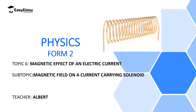We have discussed three main ways in which we can determine the direction of the magnetic field around a straight conductor carrying current. One was Ampere's swimming rule, another was Maxwell's corkscrew rule, and the third was Fleming's right-hand rule for a straight conductor carrying current.